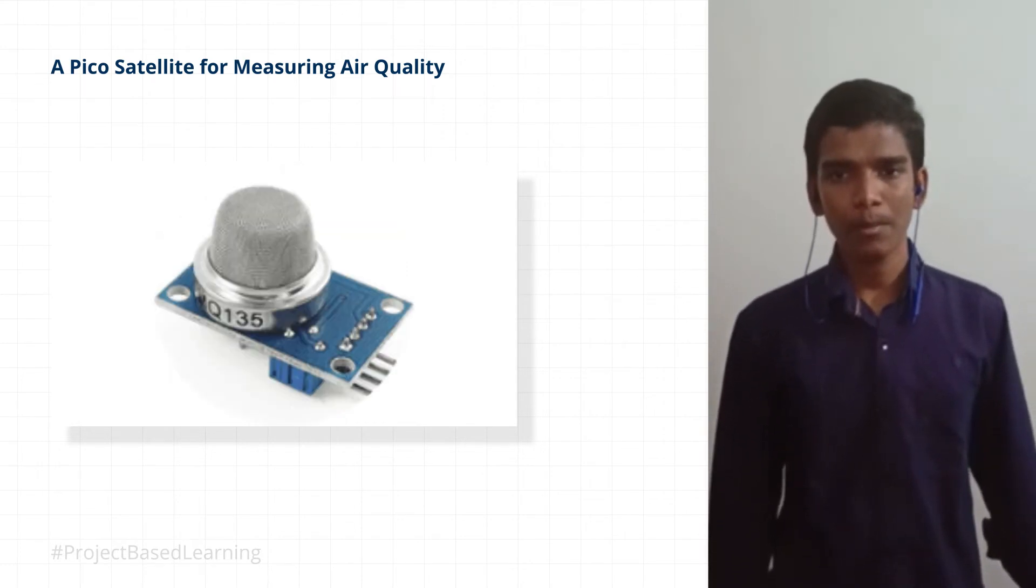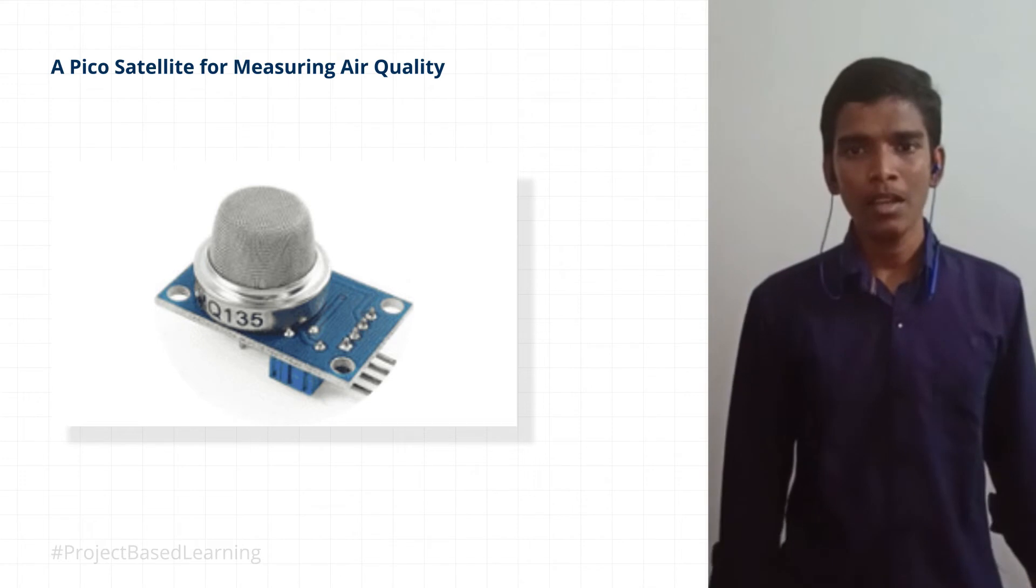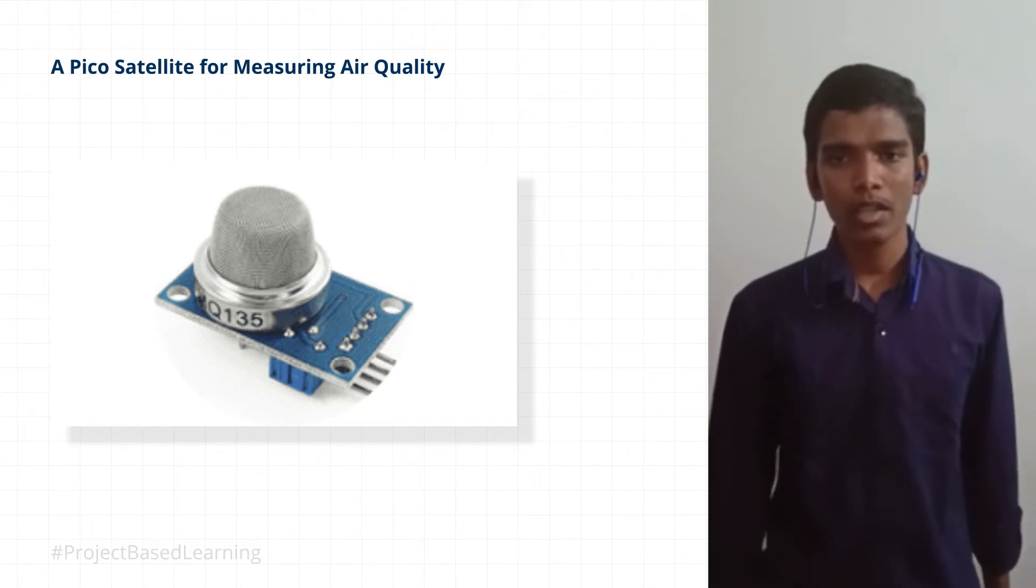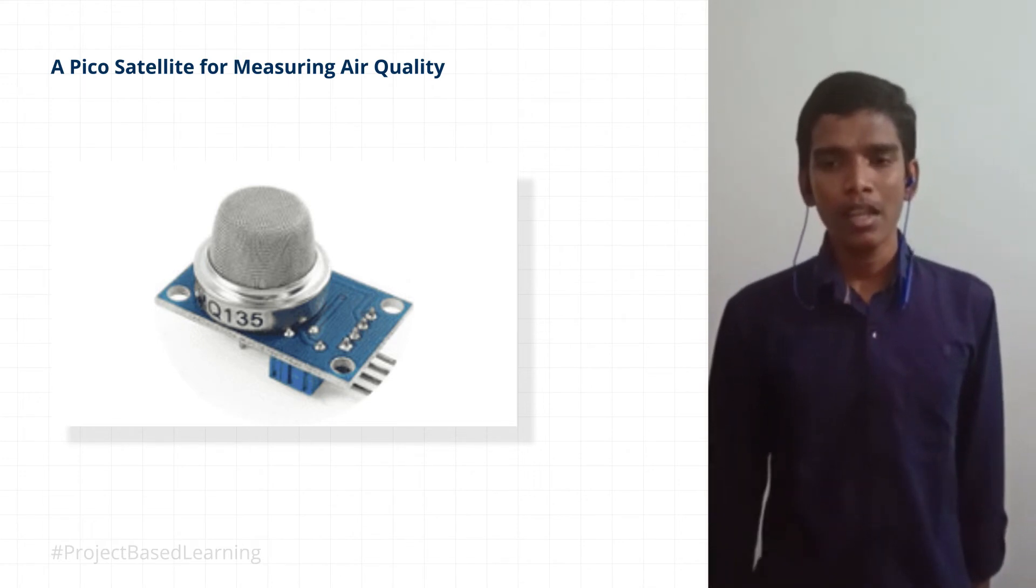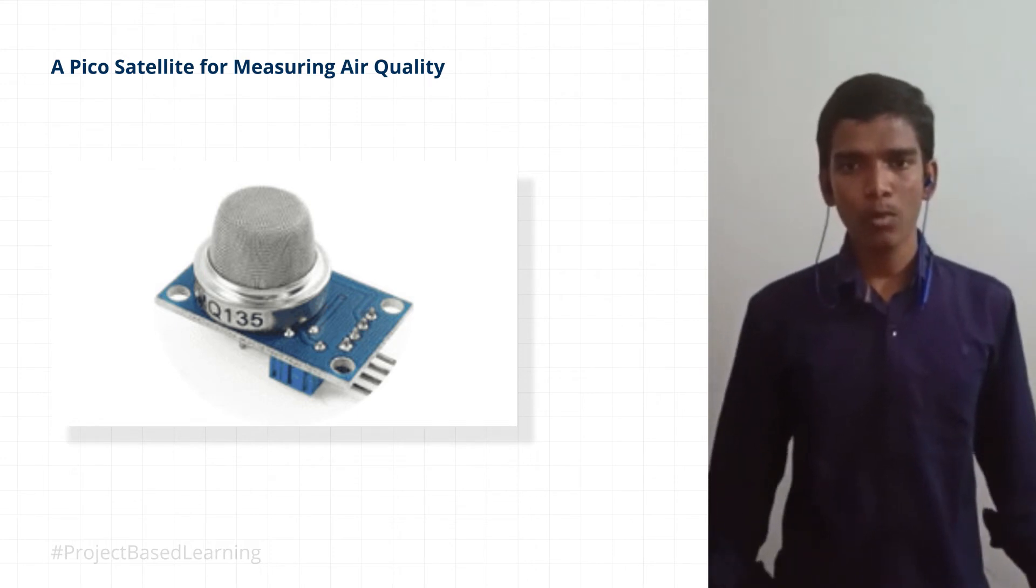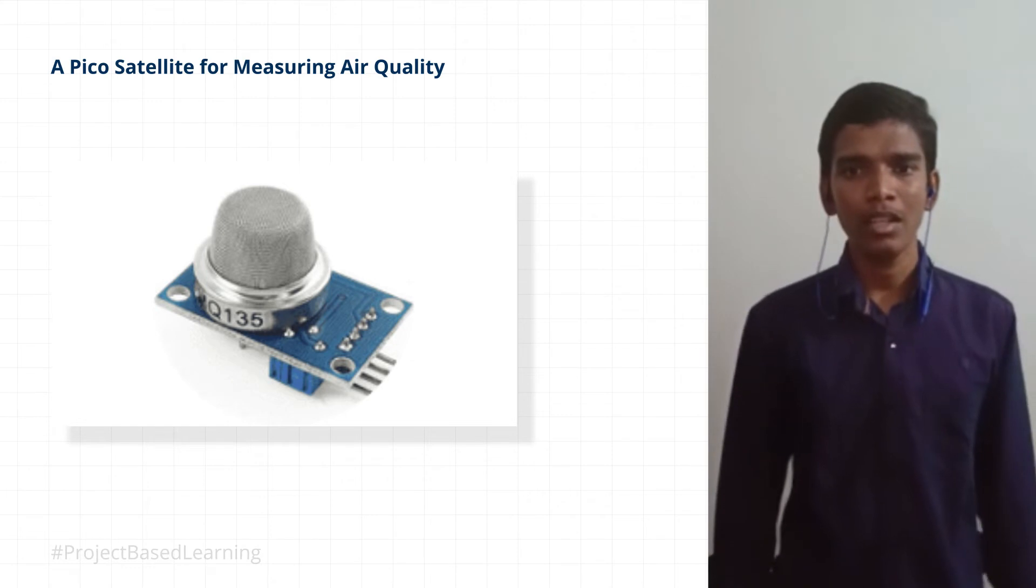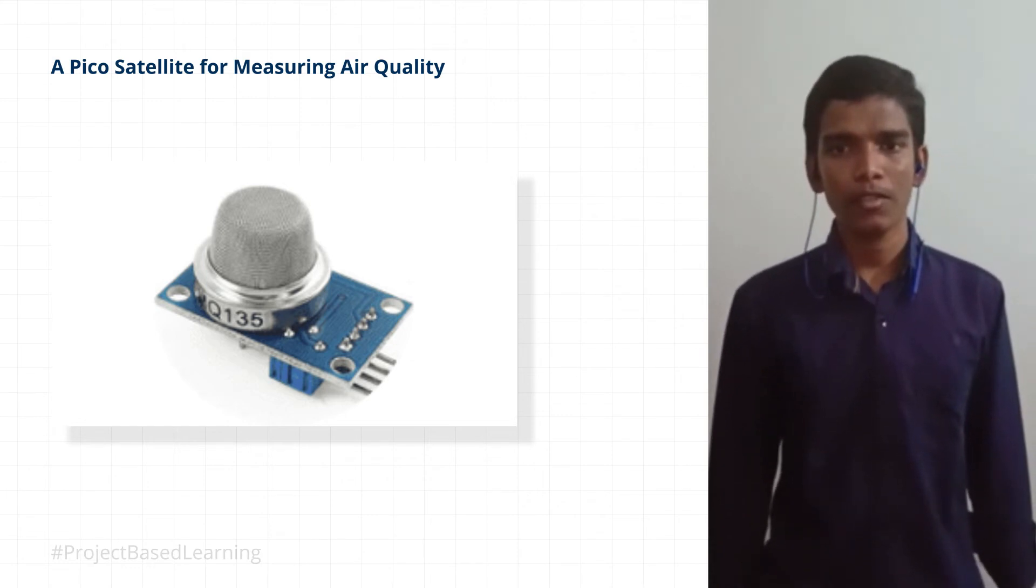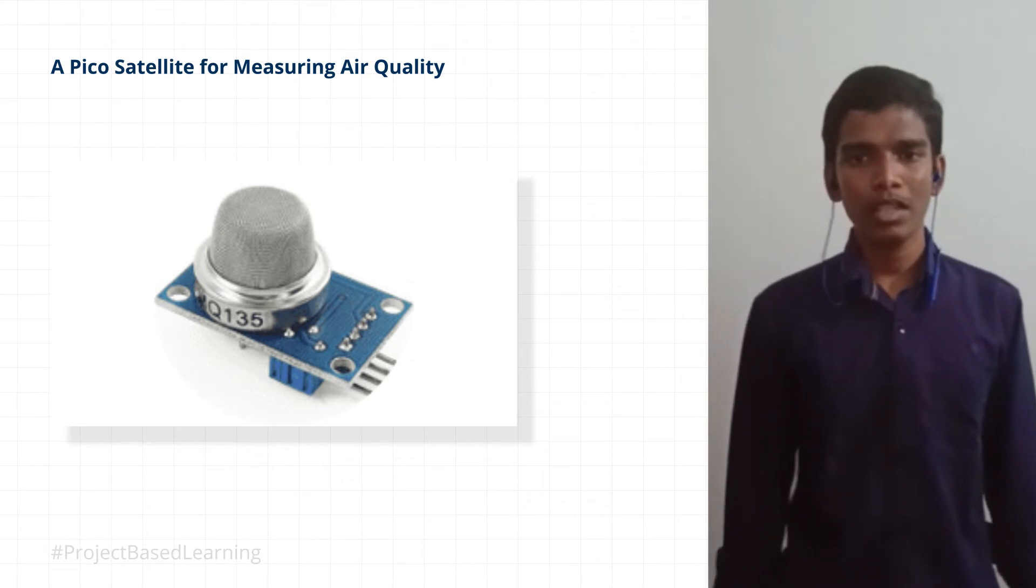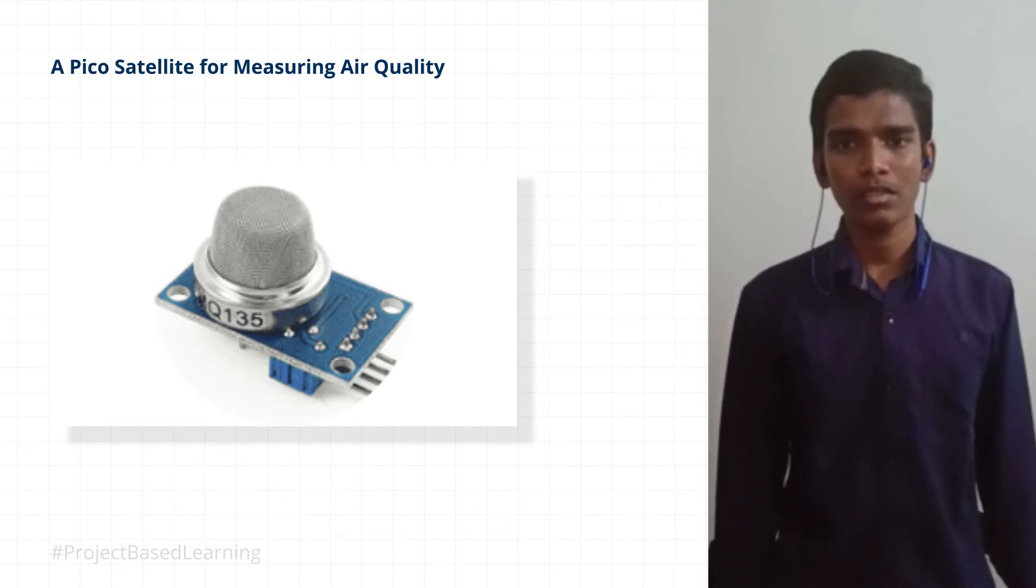Next, we have the MQ135 sensor. By using MQ135, we can detect the air quality in our area. It can give the air quality as collective data or as individual data such as carbon dioxide, sulfur dioxide, etc. Individual gas data can also be interpreted using this sensor.